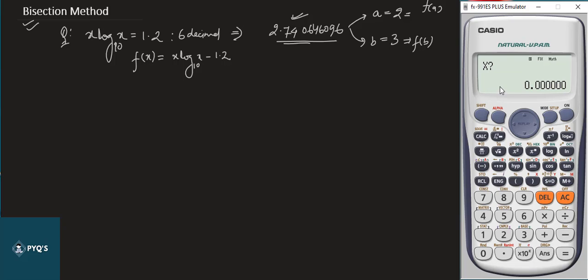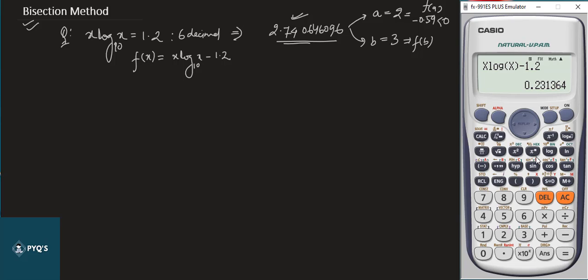Pressing equals gives f(2) = −0.59, which is less than zero. Press CALC again, enter x = 3, and press equals — we get f(3) = +0.23, which is greater than zero. So the root lies between 2 and 3, confirming our initial assumption.